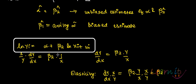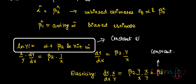An important point is that this elasticity coefficient is constant throughout — it does not vary with different values of x or y. Because of this, the log-log model is also called the constant elasticity model. This is one of its major attractions: it measures the elasticity of y with respect to x with just one single value of beta 2, independent of all x and y values.